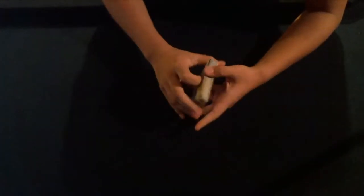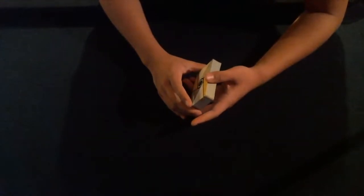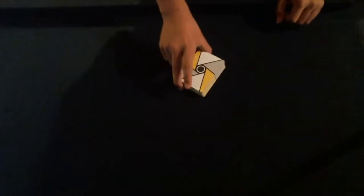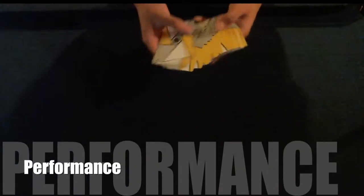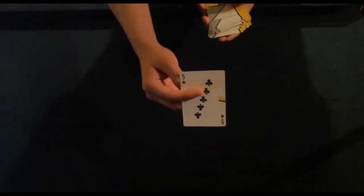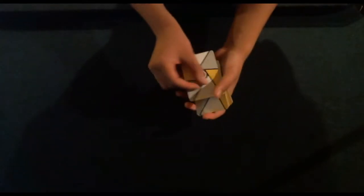Let's just get right into the performance. As always, you're gonna have your spectator select a card. In this case it is the five of clubs. We're gonna take their card and place it right here into the deck.